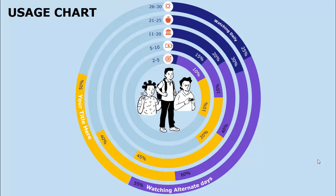In today's tutorial I'm going to show you how to create a circular bar chart slide in PowerPoint. This particular slide example shows the usage of mobile phones by teens from age groups 2-5 to 26-30, with percentages given for watching daily, watching alternate days, and other categories.